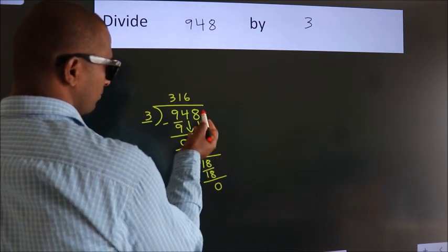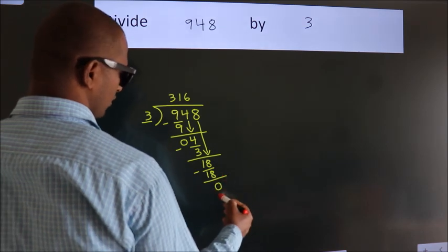After this, no more numbers to bring it down. So we stop here. This is our remainder. This is our quotient.